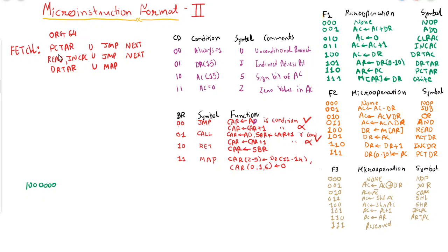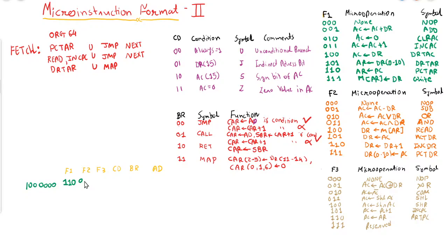The first operation is PC2AR. There will be three columns: field 1, field 2, field 3, then condition, then branch, and then address. PC2AR belongs to field 1, and the binary value for PC2AR in field 1 is 1 1 0. Since there is no other operation, field 2 and field 3 will be 0 0 0 and 0 0 0 respectively.